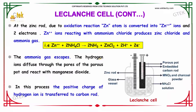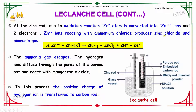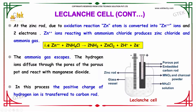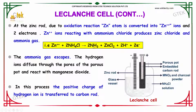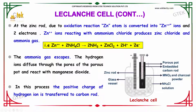At the zinc rod, due to the oxidation reaction, zinc atoms are converted into Zn²⁺ ions and two electrons. The Zn²⁺ ions react with ammonium chloride, producing ammonia, zinc chloride, hydrogen, and electrons. The ammonia gas escapes. The hydrogen ion diffuses through the pores of the porous pot and reacts with manganese dioxide. In this process, the positive charge of the hydrogen ion is transferred to the carbon rod.